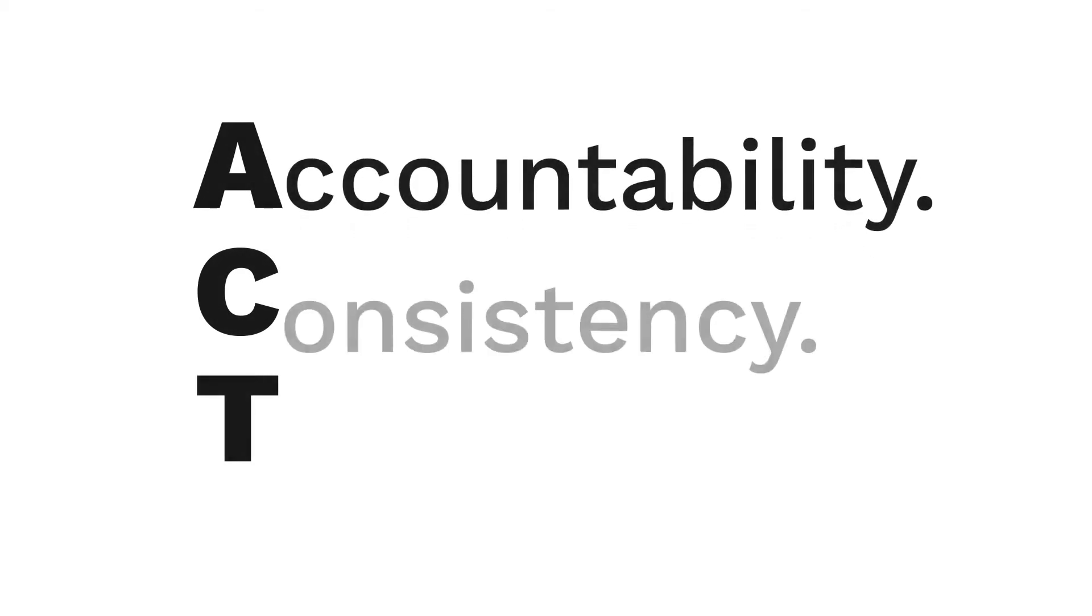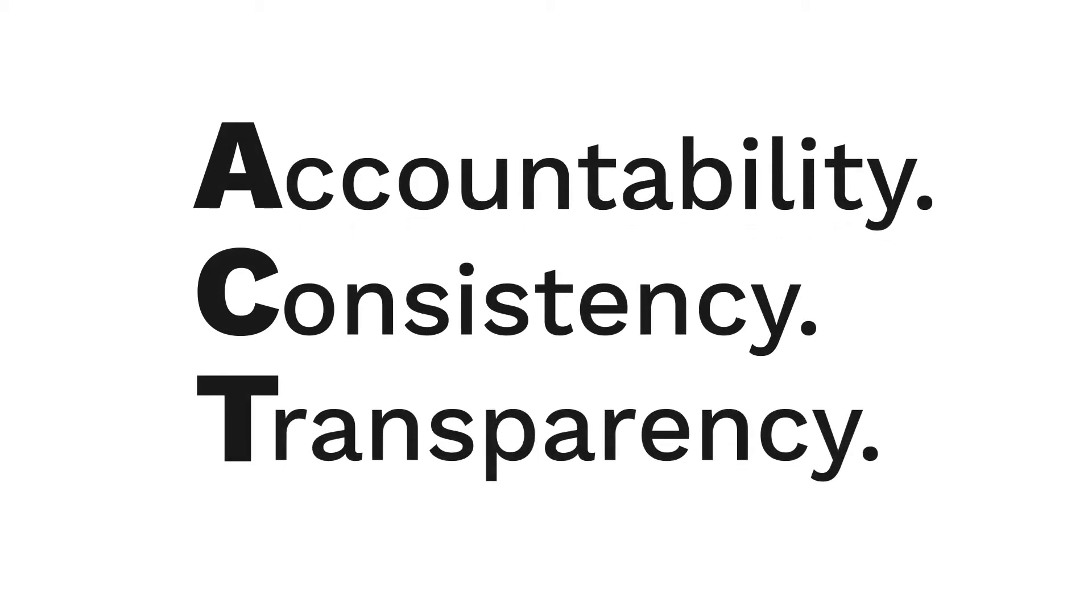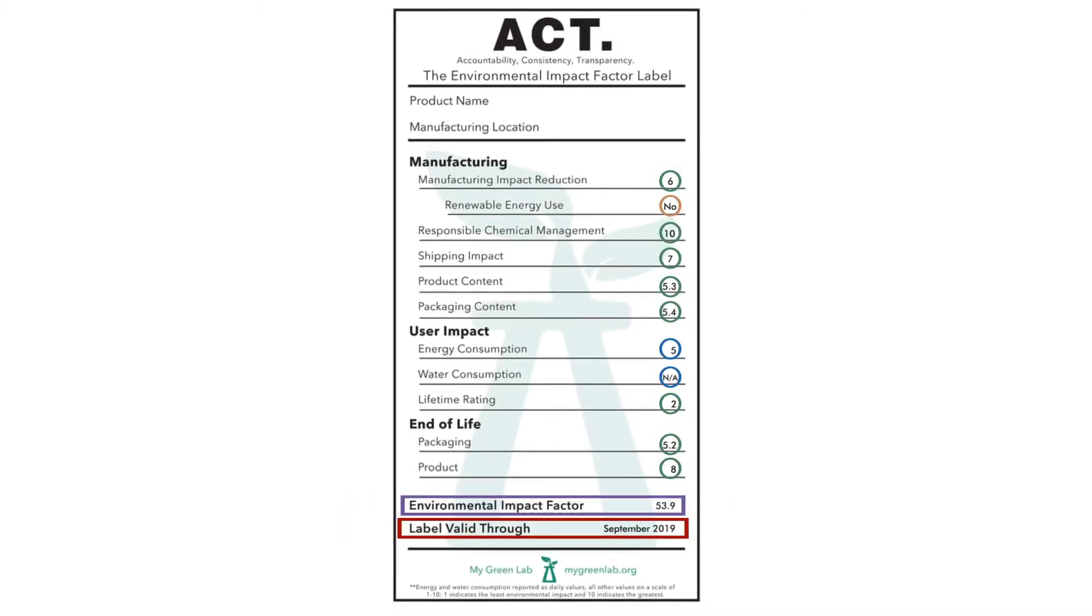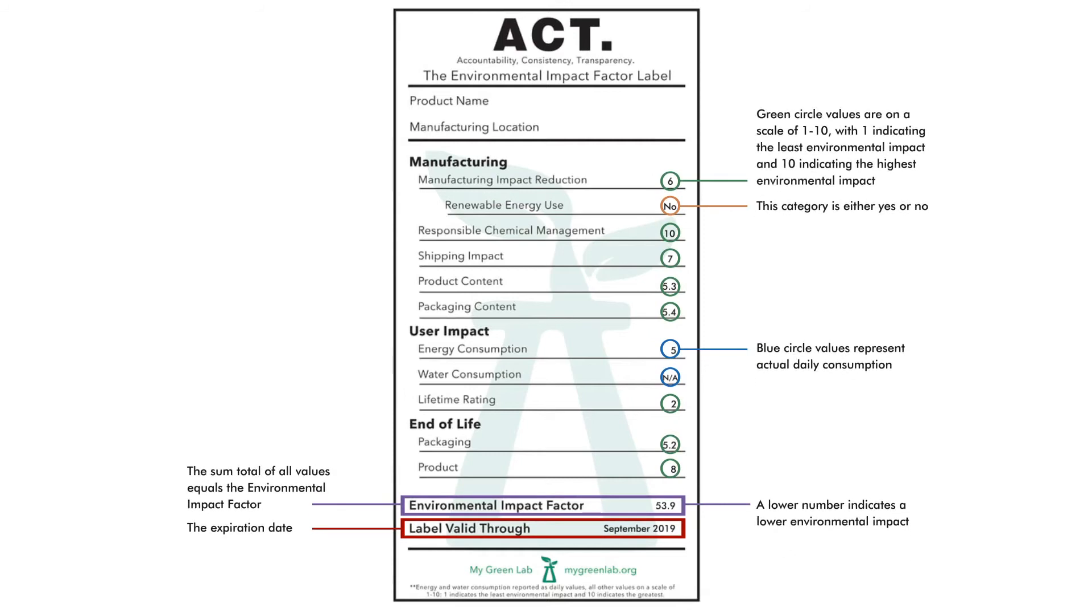It stands for Accountability, Consistency, and Transparency. So this eco label is now on over 100 laboratory products so labs can actually look to see what the environmental impact is of the things that they're purchasing so they can make smarter purchasing choices.